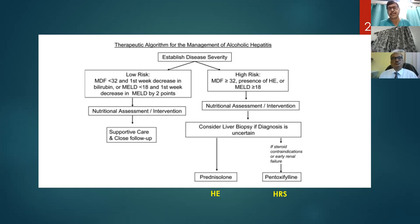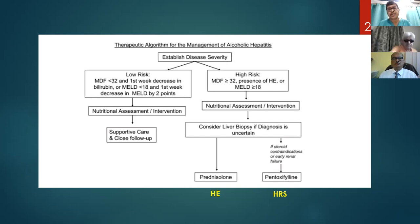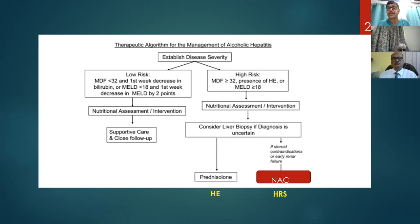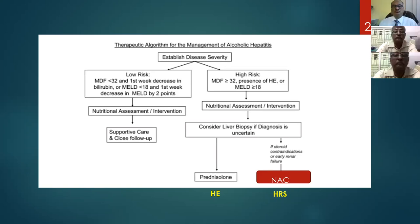In clinical practice we use Maddrey's discriminant function — those with more than 32, or even lower with hepatic encephalopathy, are a high-risk group. Liver biopsy should ideally be considered, but due to increased prothrombin time it is not feasible. Patients with discriminant function more than 32 or encephalopathy, or MELD more than 18, should be tried with prednisolone if the predominant presentation is hepatic encephalopathy, or with pentoxifylline if the predominant presentation is hepatorenal syndrome. Since pentoxifylline is not available nowadays, N-acetylcysteine is very useful to prevent renal impairment in severe acute alcoholic hepatitis. Patients with discriminant function less than 32 without encephalopathy don't need steroids — nutritional assessment, supportive therapy, and close follow-up are all that is required.